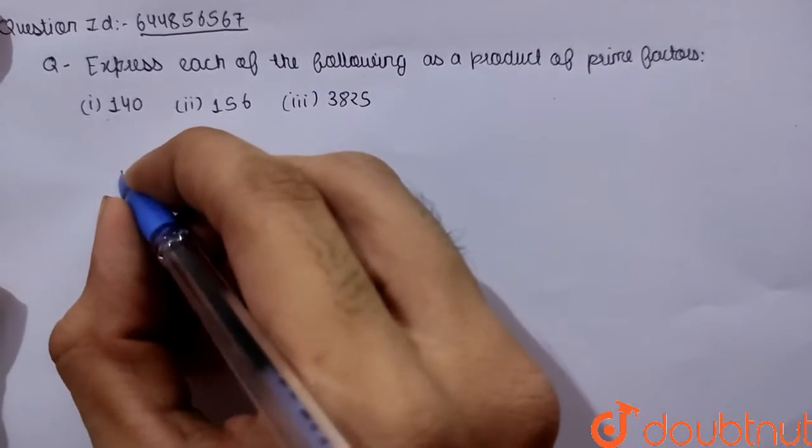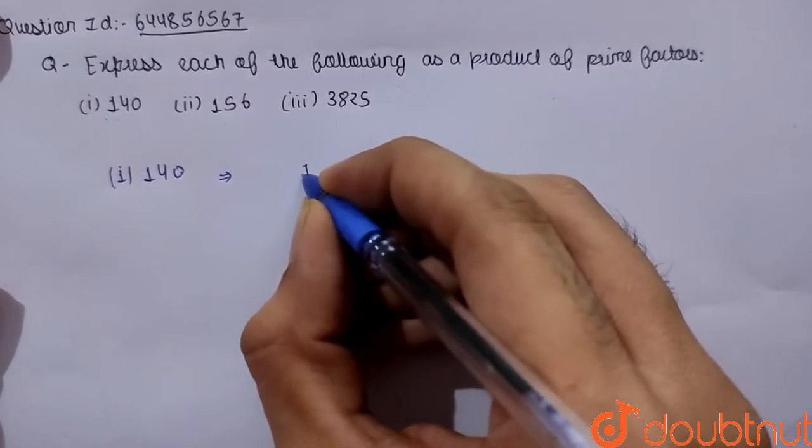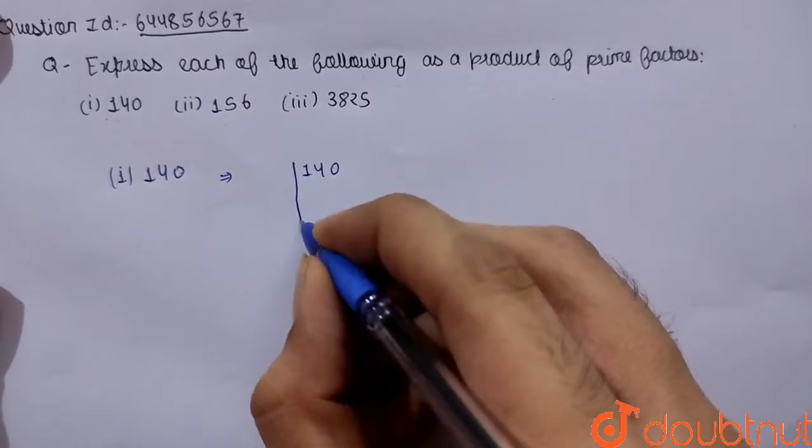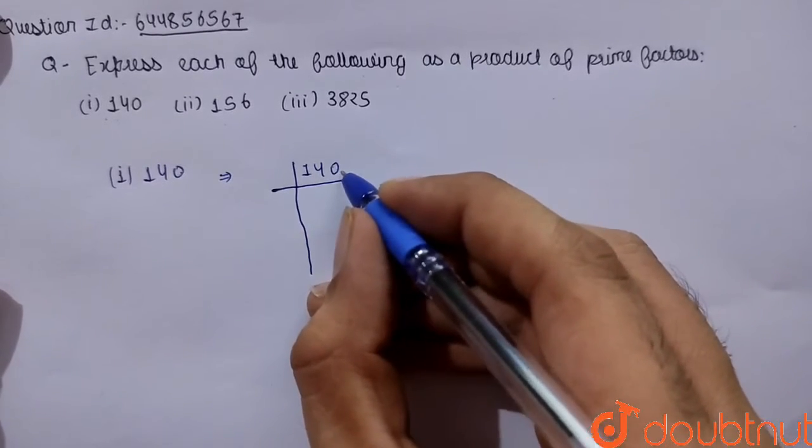So we are doing prime factorization here. We are having 140. Let's do prime factorization of 140. First of all, let's check if it is divisible by 2 or not. Yes, it is divisible because we are having 0 in the end.